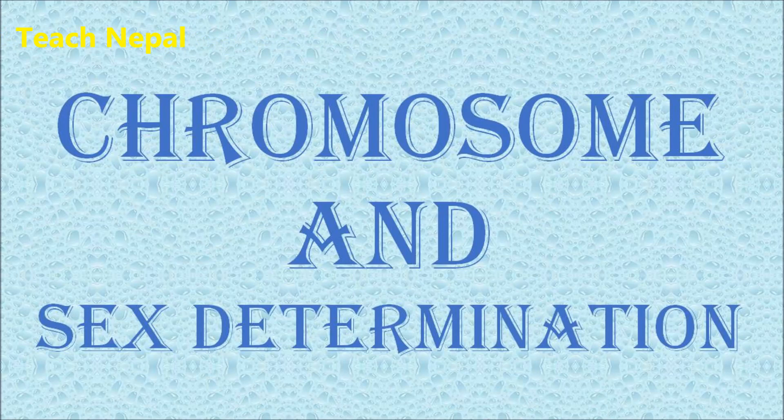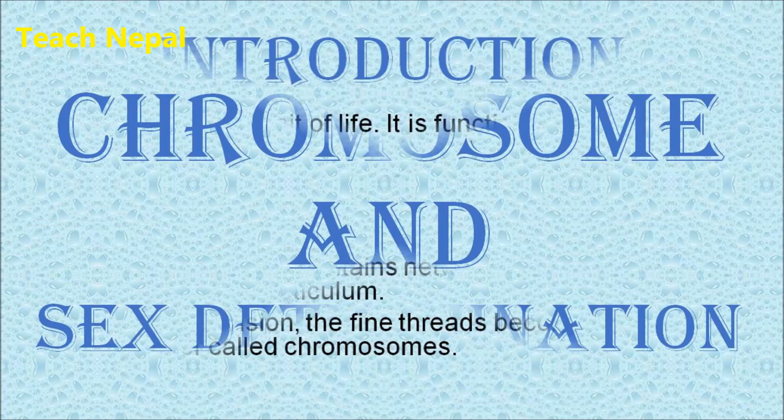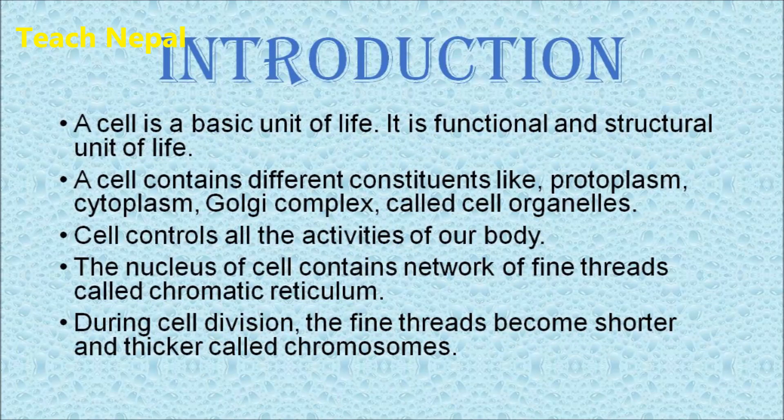Today we are going to discuss the topics of chromosome and sex determination. To begin, the cell is the basic unit of life and it is composed of different cell organelles. The controlling unit of the cell is known as the nucleus. The nucleus is made up of a thread-like structure called chromatin reticulum, which is present inside the nucleus.